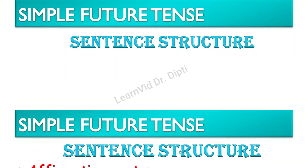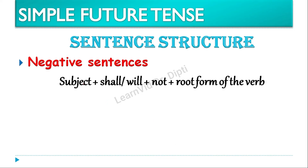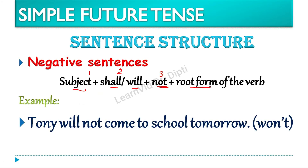Now let us see the second type of sentence structures — the negative sentences. Ismei jo rule follow hota hai, that is the same. Bas yahan par fark yeh hota hai ki pahle subject, shall ya will, aur jo third number pe lagayega — that is not — lagate hain, and then comes the root form of the verb. For example: Tony will not come to school tomorrow. Tony is the subject, will, then not at third position, and come is the root form of the verb.